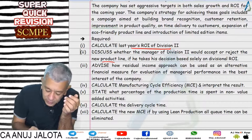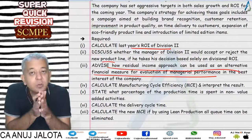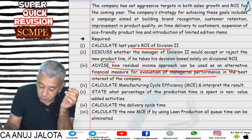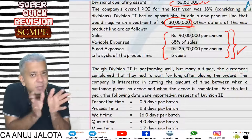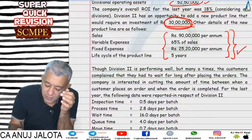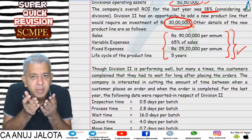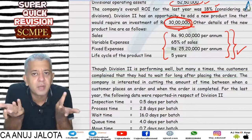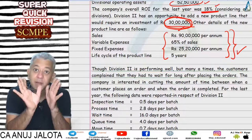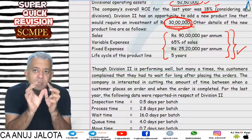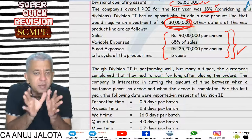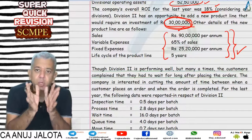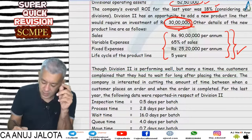Then we were asked how the residual income approach can be used as an alternate financial measure. In the residual income approach, we take the operating income from the new product, subtract the minimum return on the 30 lakh investment — that is 18%, so 30 lakhs × 18% = 5 lakh 40. Since that figure was positive, residual income says it is better to undertake it. ROI is a percentage concept, while RI is an absolute concept — if you are left with something in the end, you should do it, whether your percentage return falls or not.